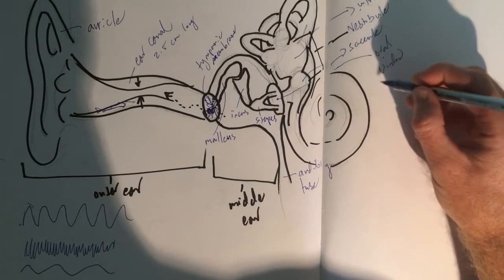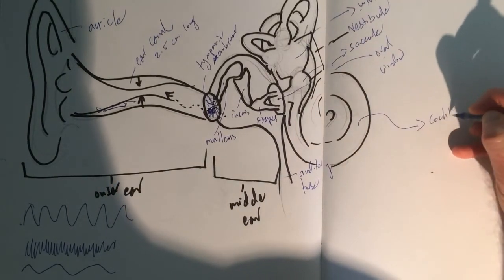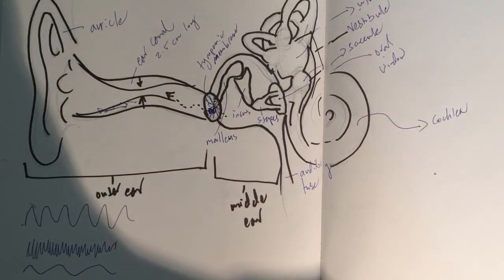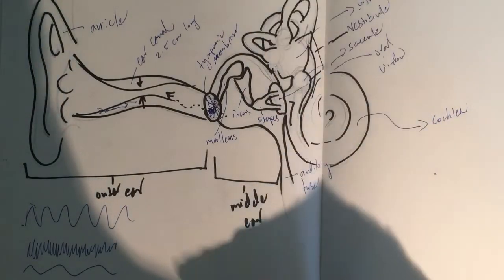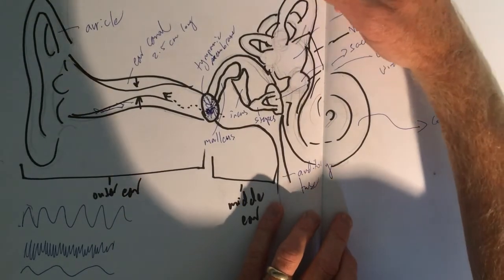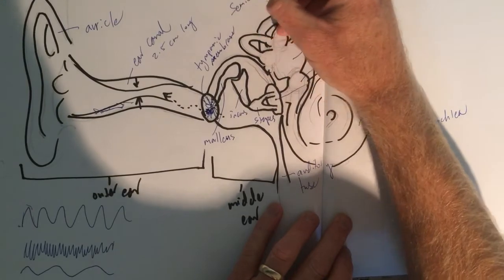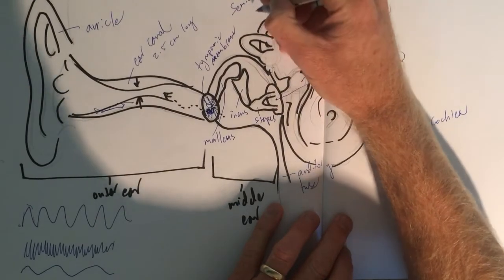Now, this coiled up structure right here that looks like a big snail, that is called the cochlea. Now, just to give you an overview, and I'll kind of go into detail. And one more. These arch-looking structures, we have three of them. These guys are called the semicircular canals.